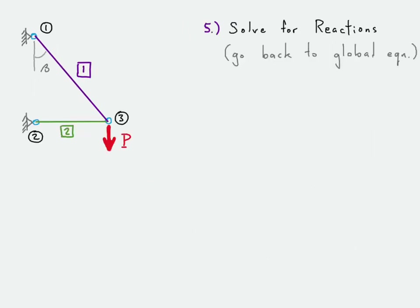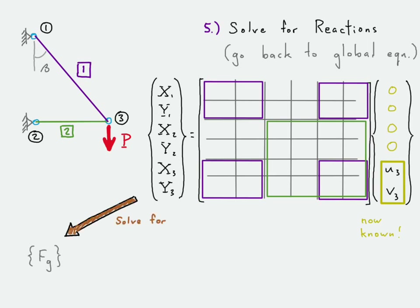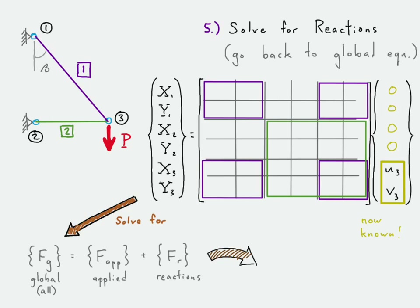Once we know the displacements at node three, we solve for the reactions by returning to the global stiffness matrix equation. Nodes one and two have zero displacement, and we now know the displacements at node three. We solve the global force vector, which gives us both the reactions and the applied loads. To isolate just the reactions, we take that global force vector result and subtract the applied loads.